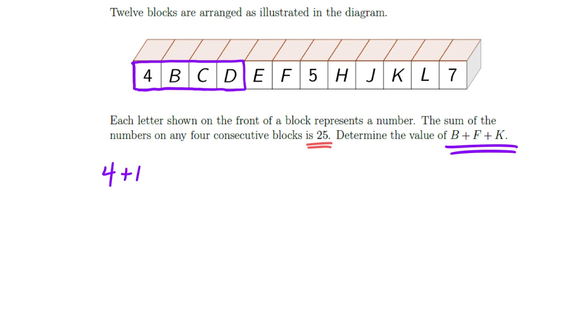So I could start to just blindly write out an equation that those four have to equal 25. And pretty quickly then, I could see that since one of them is 4, the other three have to add to 21.